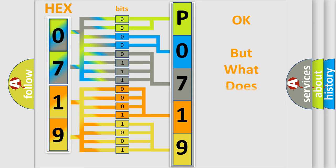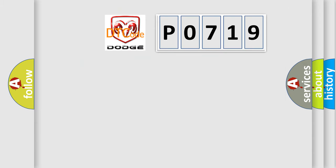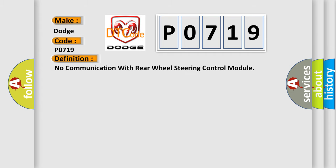We now know how the diagnostic tool translates received information into a more comprehensible format. The number itself does not make sense if we cannot assign meaning to what it actually expresses. So, what does the diagnostic trouble code P0719 specifically interpret for Dodge car manufacturers? The basic definition is: no communication with rear wheel steering control module.